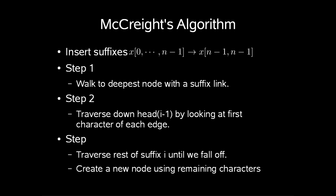We insert suffixes starting from the longest suffix x[0...n-1] followed by the dollar sign to the shortest one which is x[n-1...n-1]. For i equals 0 up to n-1, the first step is to walk to the deepest node with a suffix link on the path to the current node. Jump to the node pointed by the suffix link. The next step is to traverse down the remainder of head(i-1) from this node by analyzing only the start of each edge. Last step is to traverse down the remainder of suffix i until the matching falls out. Create a new node here with the remainder of characters labeling leaf i.